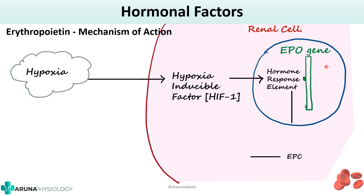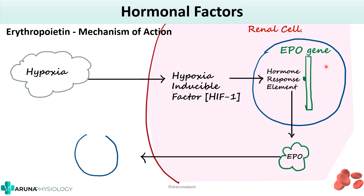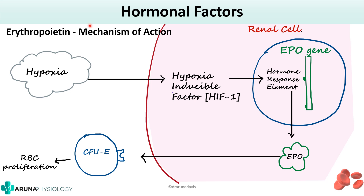The erythropoietin gene will produce erythropoietin, which in turn will act on the precursor cells as well as the progenitor cells of erythropoiesis, especially the CFU-E — colony forming unit erythroid. So it acts on the precursor cells of erythropoiesis and thereby speeds up RBC proliferation, so that there will be more RBC production. That is how erythropoiesis is stimulated by erythropoietin.